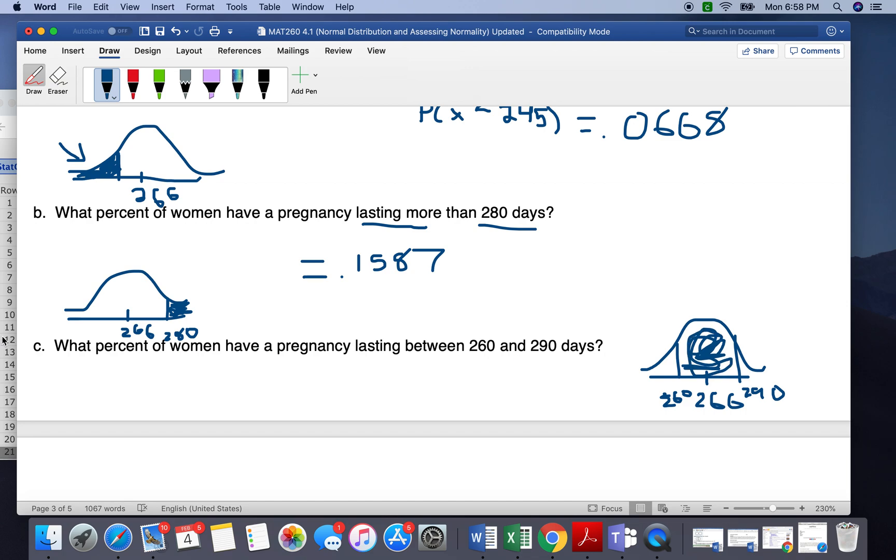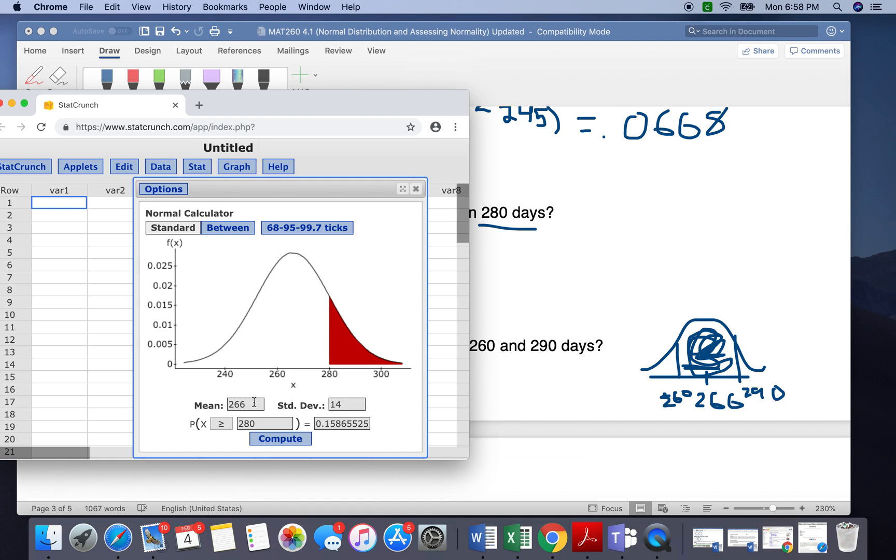So again, we're going to go back to StatCrunch. This time, we're going to click the between button, because we want in between. And we want to change the left one to 260. And the one on the right will be 290.